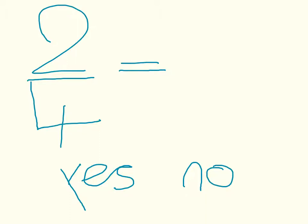Today, we are going to show you how to find equivalent fractions by simplifying. Here we have 2 over 4. First, let's see if both the numerator and denominator are in the same times table.